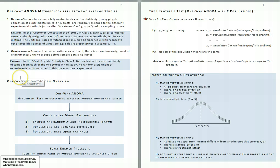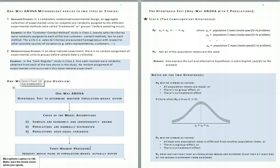To complete a one-way analysis of variance, we first do the hypothesis test to determine whether population means differ. After we've completed the hypothesis test, we check the model assumptions. If we've concluded that the model assumptions hold and that the population means are different, we then proceed to a Tukey-Kramer procedure to determine which pairs of population means actually differ.